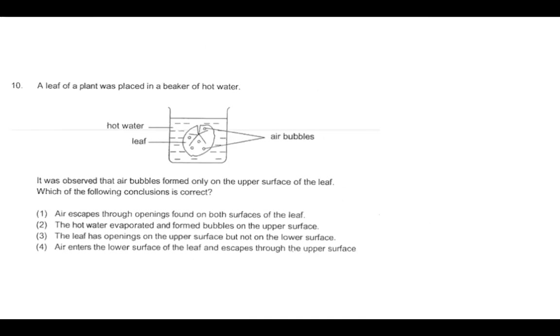A leaf of a plant was placed in a beaker of hot water. It was observed that air bubbles formed only on the upper surface of the leaf. Which of the following conclusions is correct? Let's think about what are these air bubbles? That's oxygen. So if we look at option one, air escapes through the openings found on both surfaces of the leaf. Well, no, that's not true because then we'd see bubbles on the lower surface as well. Whereas we only see them on the upper surface. The hot water evaporated and formed bubbles on the upper surface. No, because we're not thinking about water evaporating. We're thinking about oxygen being produced. Number three, the leaf has openings on the upper surface but not on the lower surface. Well, that would make sense because we only see bubbles on the upper surface. So far, three is correct. But when you're doing the exams, I want you to go through the options and make sure that you've eliminated them all. Number four, air enters the lower surface of the leaf and escapes to the upper surface. No, because if it had openings on the lower surface, then you'd see bubbles there as well. So the answer is number three.